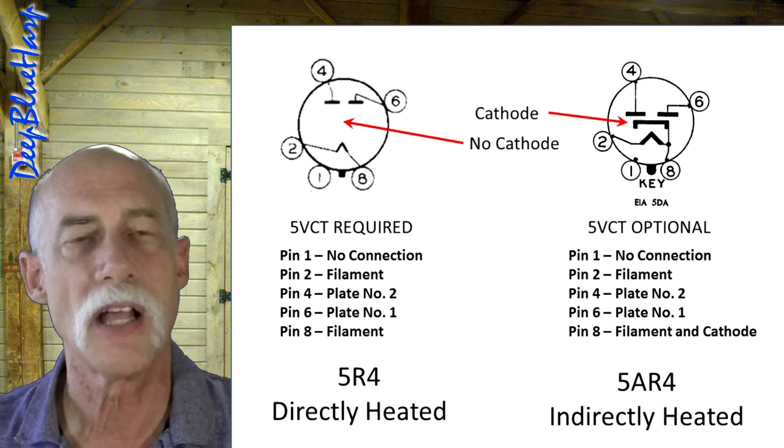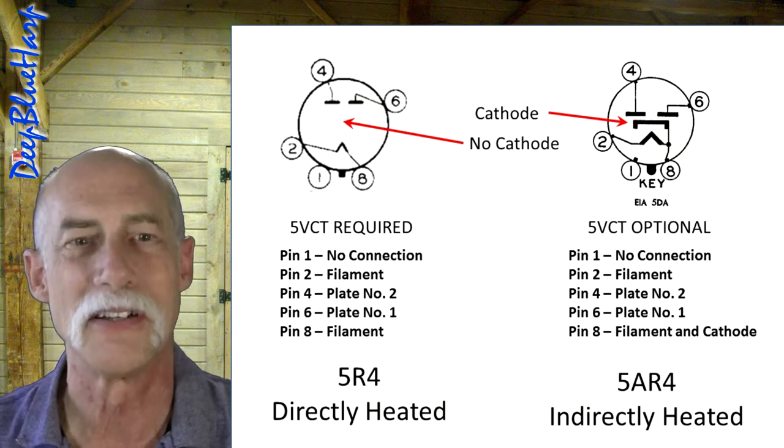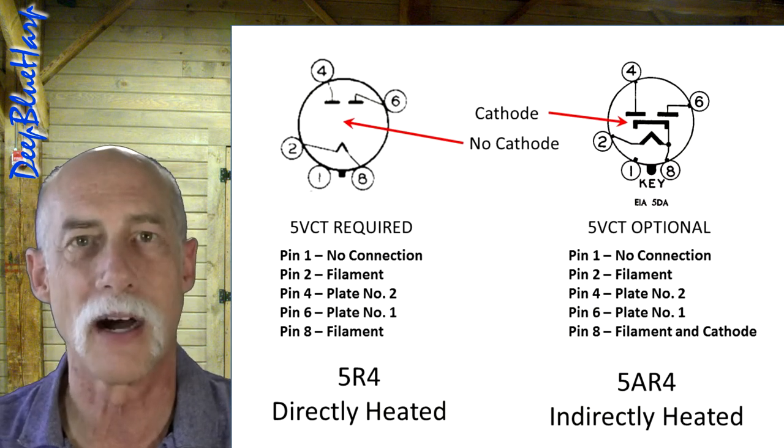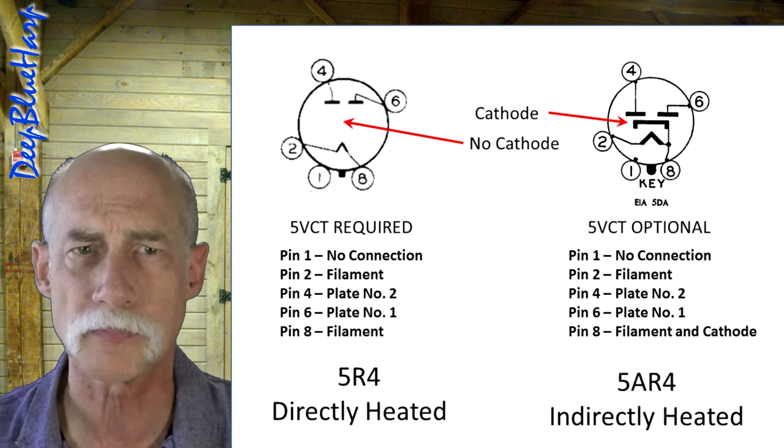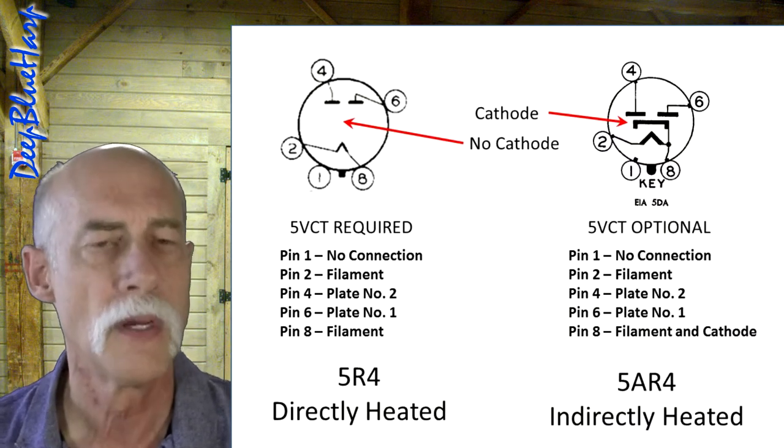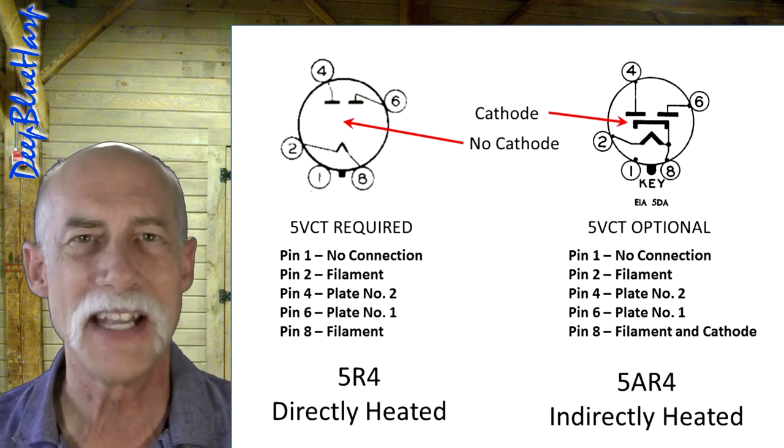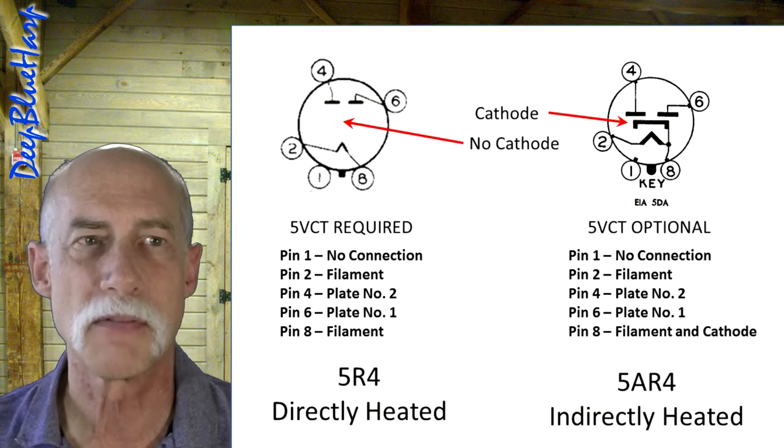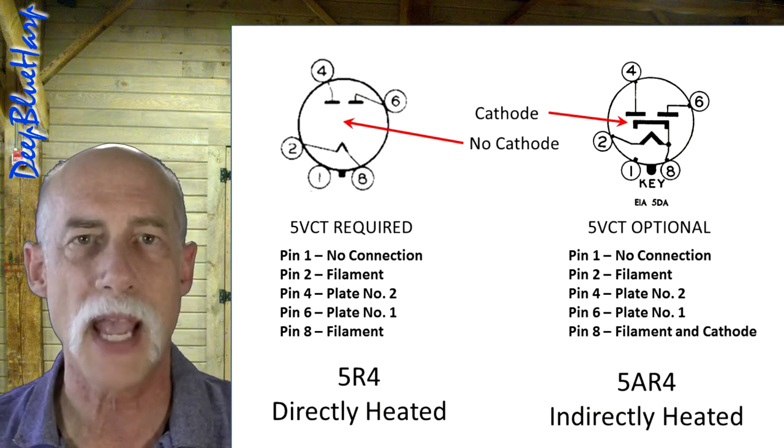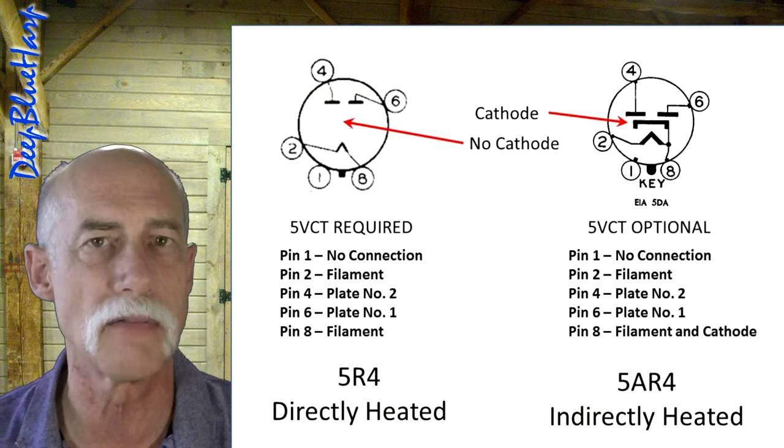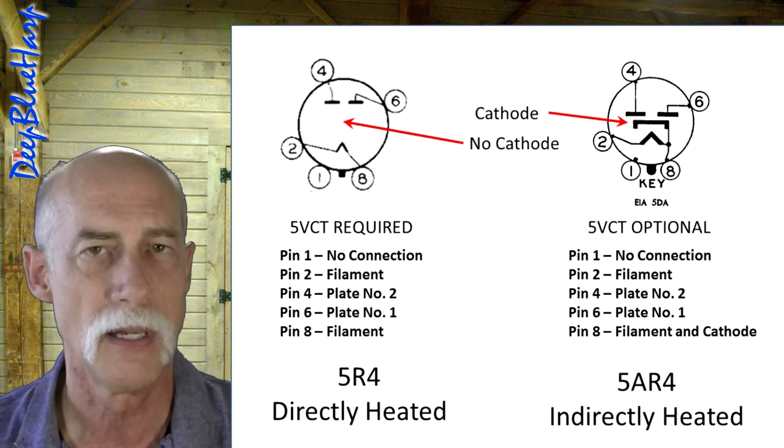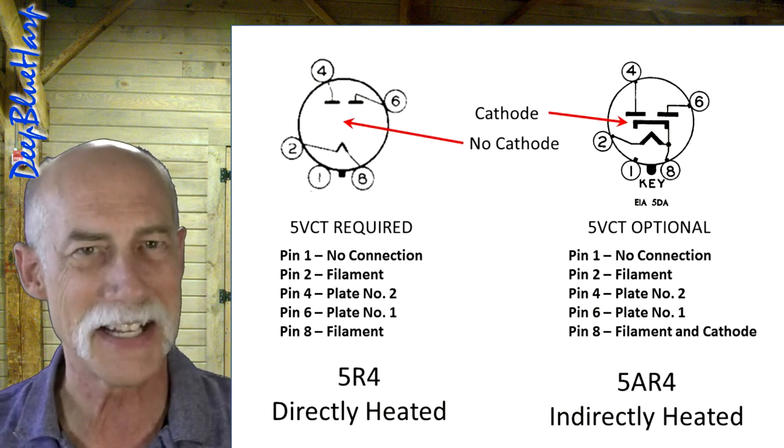What's the difference between a direct and indirect heated vacuum tube rectifier? On the left is a 5R4 direct heated rectifier, and on the right is a 5AR4. They're not interchangeable, almost. You can use an indirect heated vacuum tube in place of a direct heated vacuum tube, but you can't put a direct heated vacuum tube in place of an indirect vacuum tube. I'll show that in the next slide.